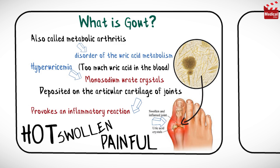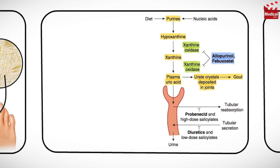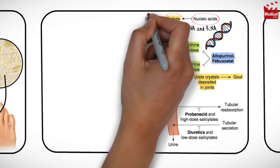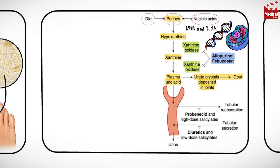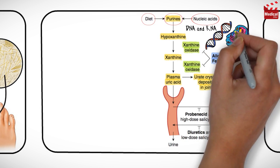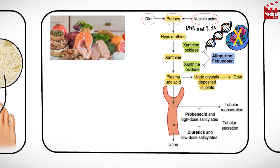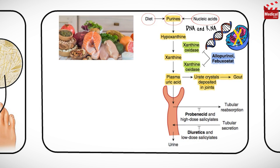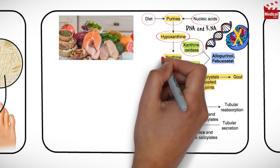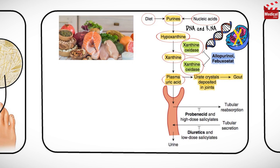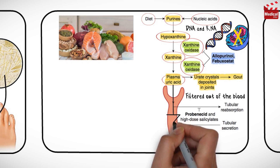Let's discuss how gout occurs in the first place. To understand the cause of gout, let's take a look at this diagram, starting with purines, which come from two sources: from nucleic acids like DNA and RNA, and from diet. When cells along with their nucleic acids are broken down throughout the body, or when someone consumes purine-rich foods like shellfish, anchovies, red meat, or organ meat, those purines are converted into hypoxanthine, which is then converted by the enzyme xanthine oxidase to xanthine, then to uric acid.